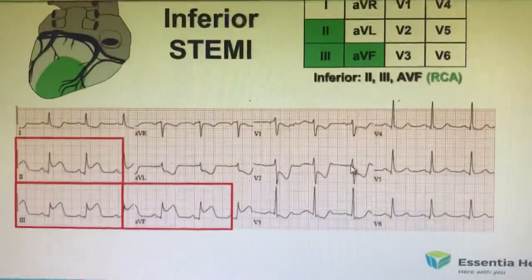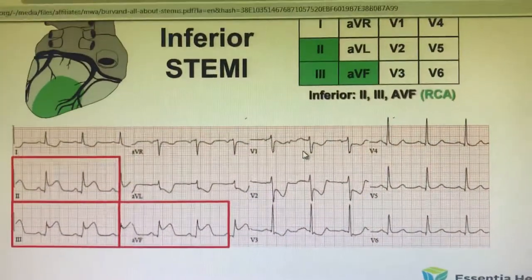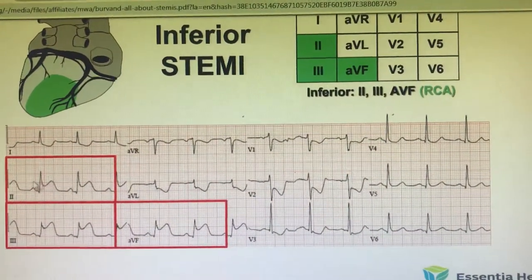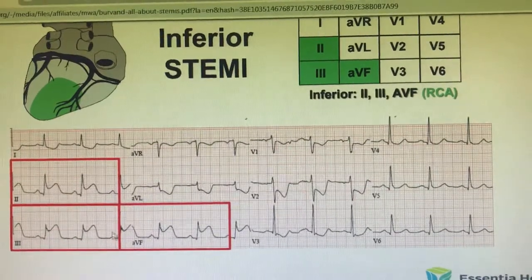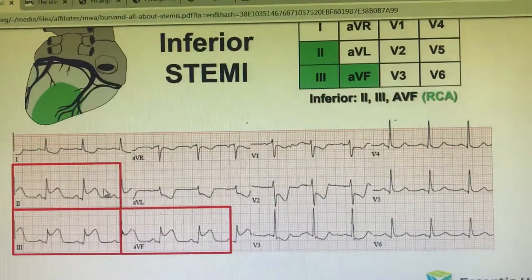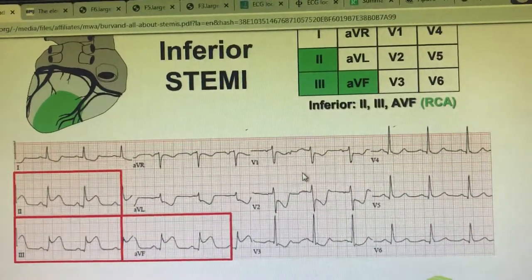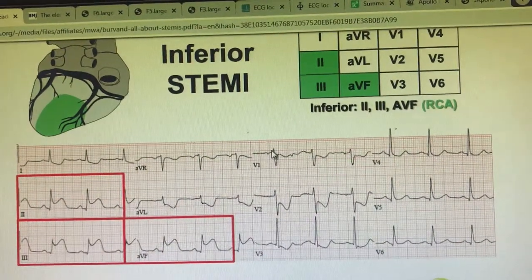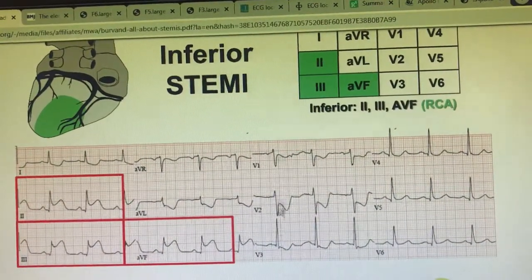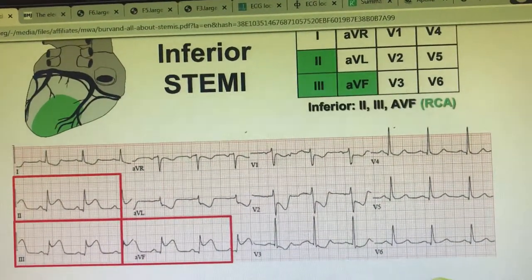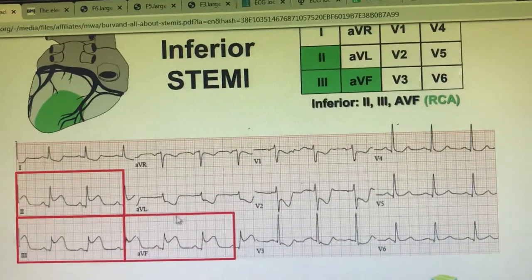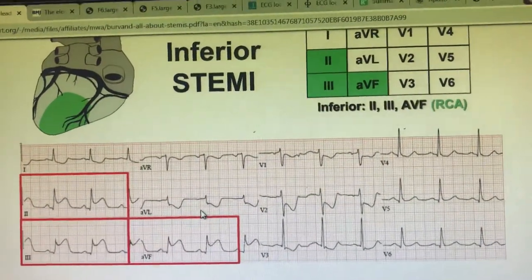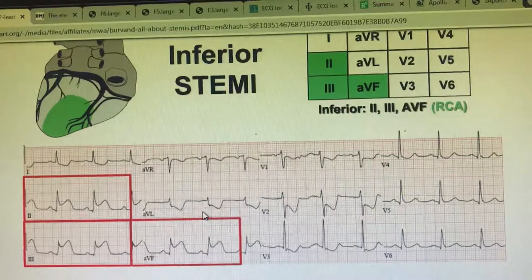This is one of the classic cases of inferior wall MI. There is a huge ST elevation in II, III, and aVF — lead III greater than lead II — and there are reciprocal changes in V1, V2, V3. V2 and V3 are showing ST depression. Lead I and aVR are also showing depression. So most probably it is the RCA which is being affected.